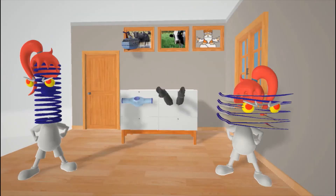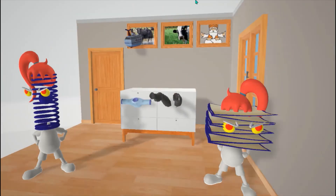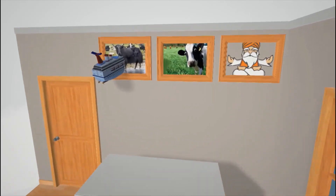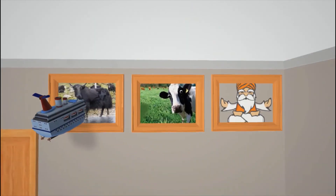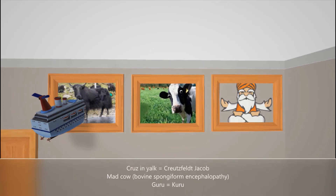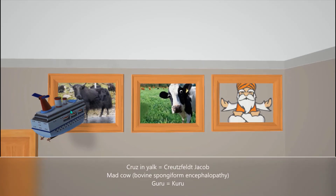Now let's look at some specific prion diseases — three of them. Here's a picture of a yak on the wall, and in her anger, Prima took a cruise ship and stuck it through the yak. Cruise ship in the yak is for Creutzfeldt-Jakob disease.